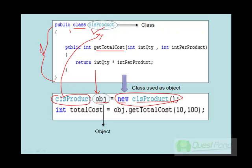To define a class you use the class keyword, and to create an object of that class you use the new keyword. Once the object is created you can then make calls to the function. So when I created the object called obj, I can now call the function by saying obj.getTotalCost, pass in whatever value is needed, and get the output.